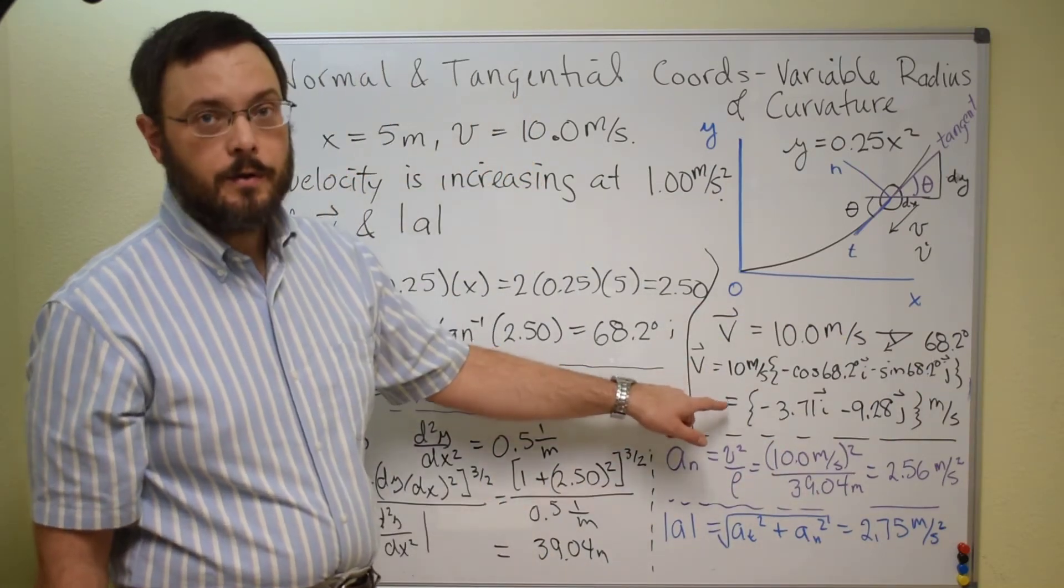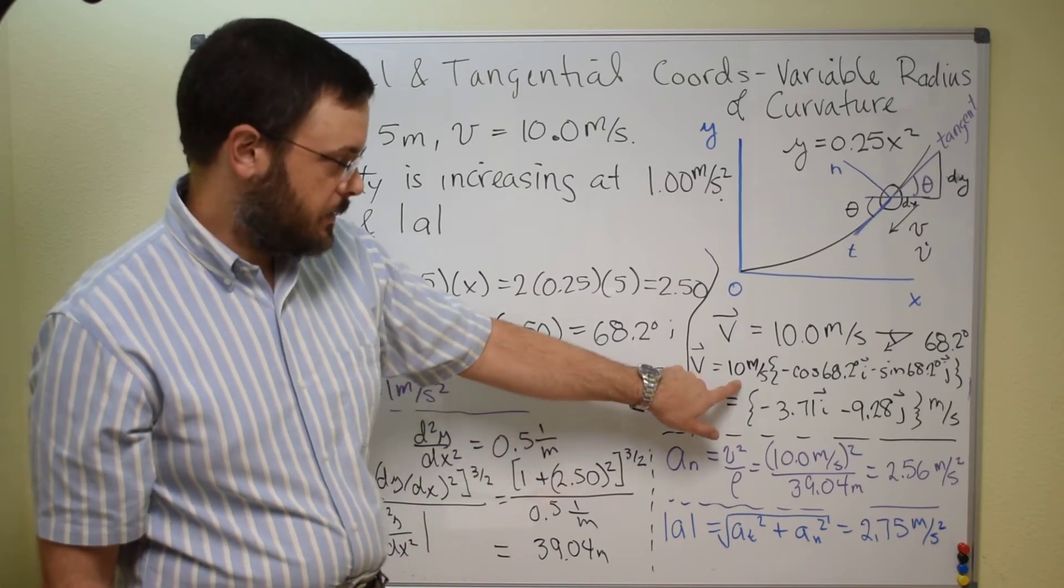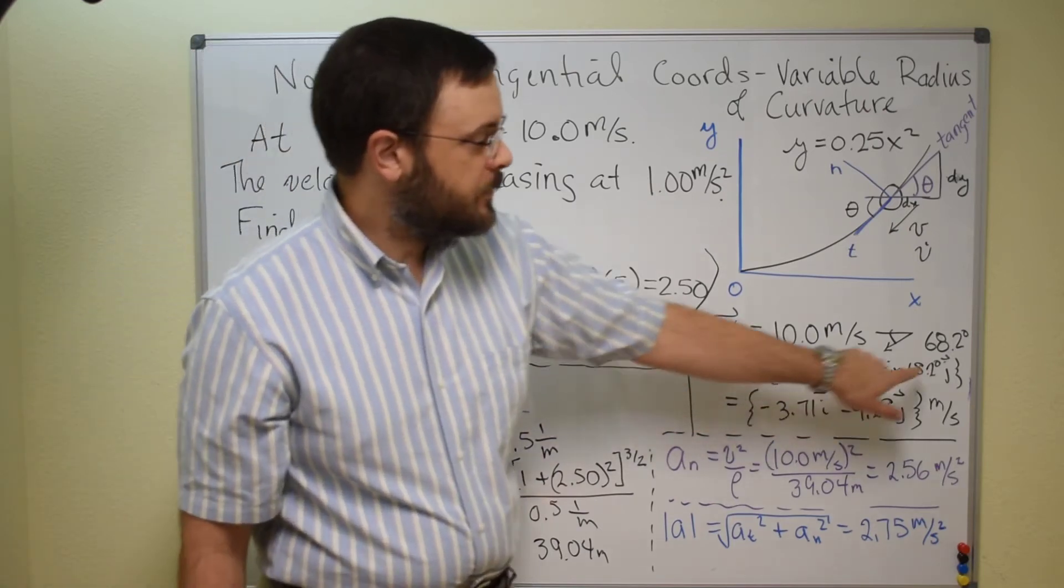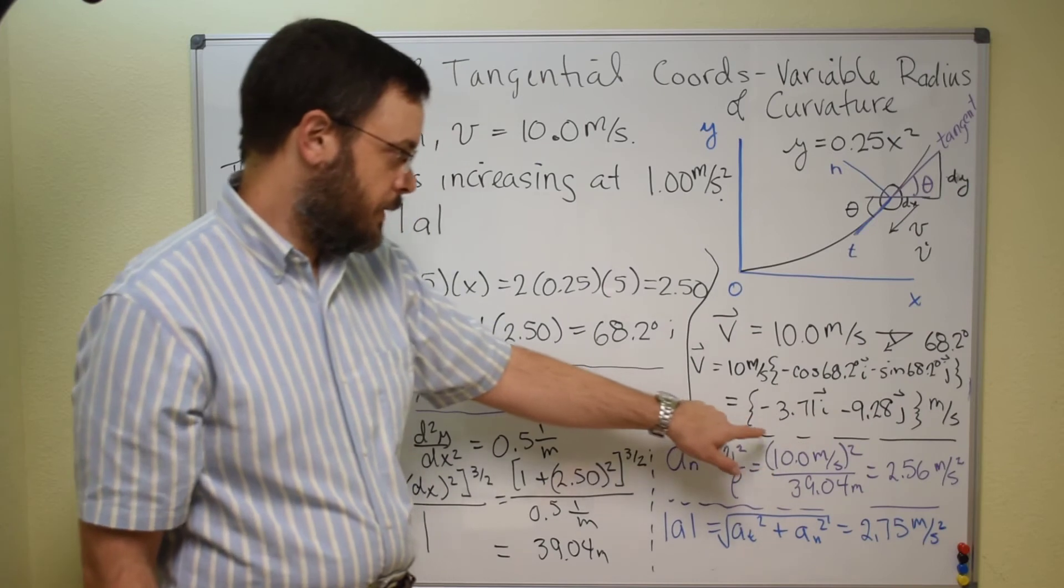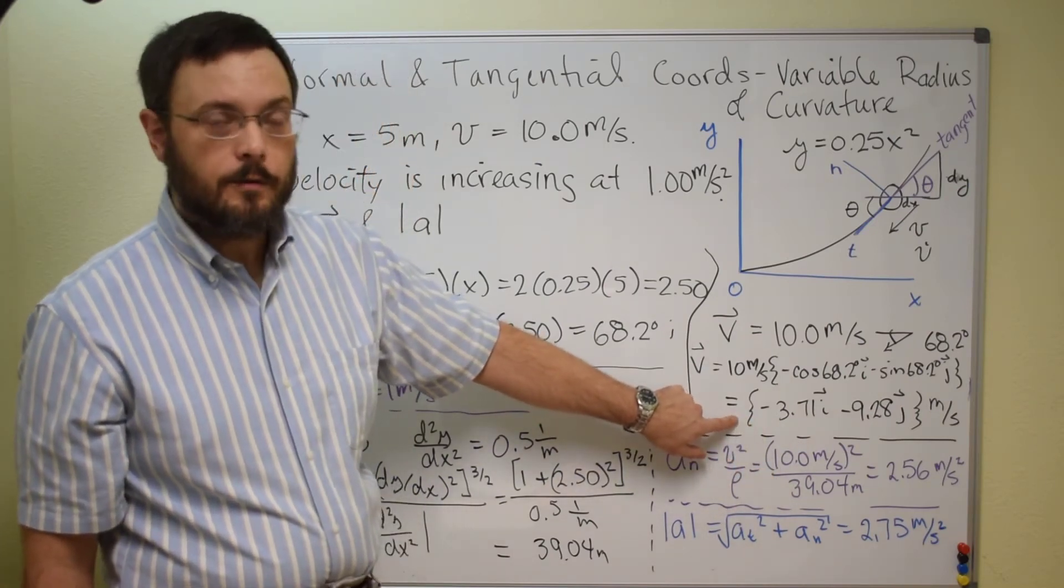Or we could go ahead and show it in Cartesian coordinates by taking the magnitude, multiplying through by a unit vector going in that direction, and then we get this as our velocity.